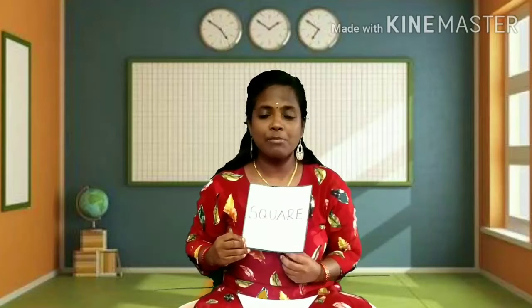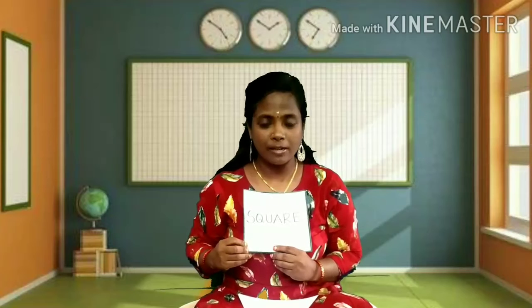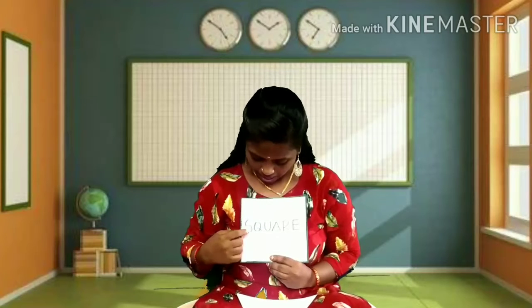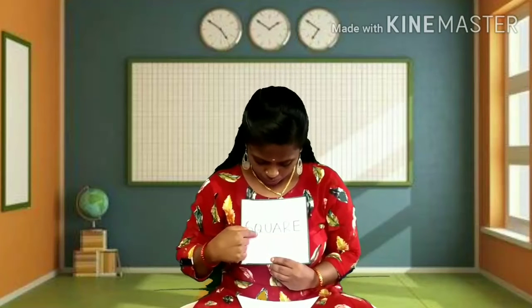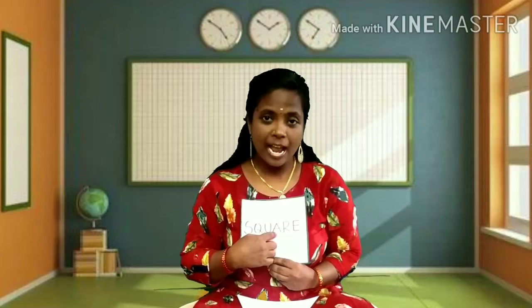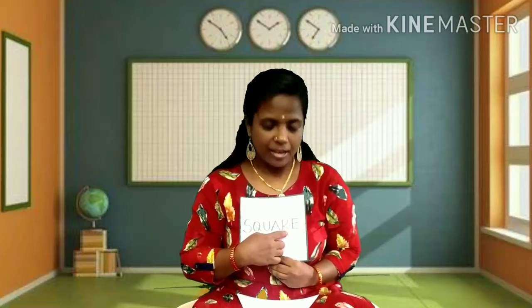Shall we read the spelling of square? S, Q, U, A, R, E. Square.